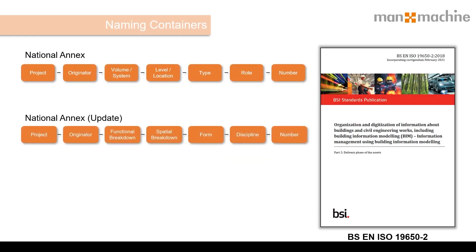I'm also going to talk about naming containers, as there is now a new feature in both Autodesk Docs and BIM 360. One thing we need to consider is the National Annex was updated in February 2021, as identified on screen as the National Annex Update. Some of the field naming has changed, and you may want to set your BIM 360 or Autodesk Docs up to suit the initial update or the previous release.